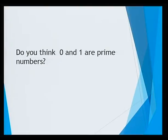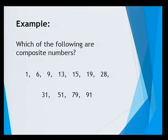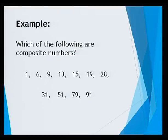Do you think 0 and 1 are prime numbers? 0 and 1 are neither prime numbers nor composite numbers. 0 and 1 are in fact called special numbers because they are neither prime nor composite. Remember, 1 is neither prime nor composite.